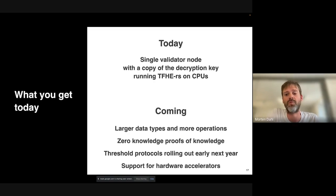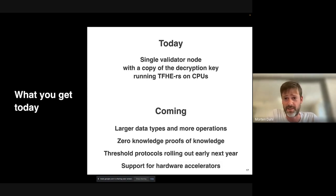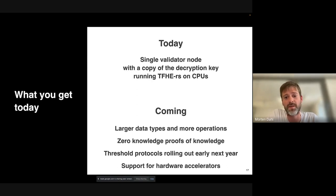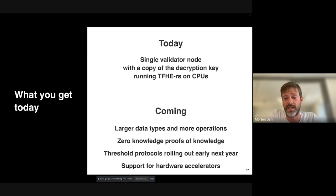Where we are now: we have a devnet that we'll be using here in a bit. We're running a single validator node — just a proof of concept where it has a copy of the decryption key. It's running our homomorphic library on CPUs, and we're expecting speedups from moving to other hardware processing units. We're rolling out the threshold protocols later this year, and also adding support for various hardware accelerators.